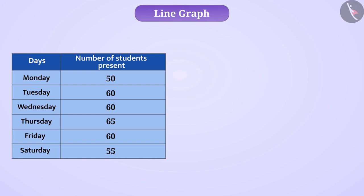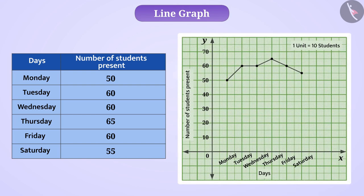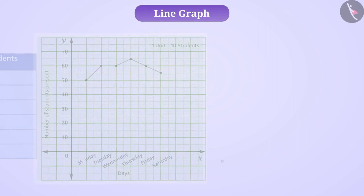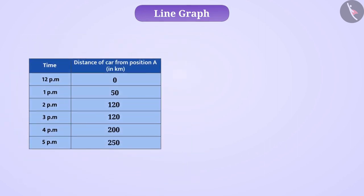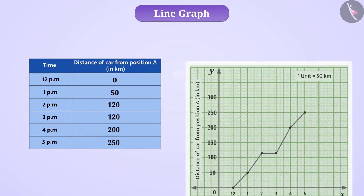Such data can be presented by a line graph. Similarly, the distance travelled by car at different times can also be changed which can be presented as a line graph.